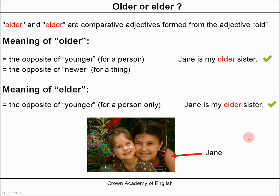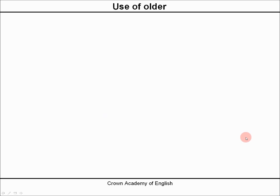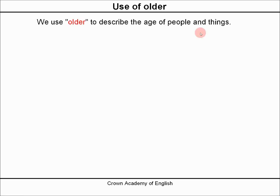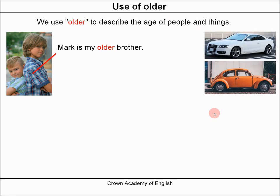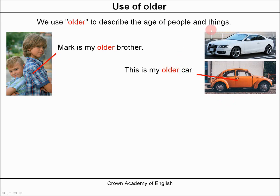So let's now look in more detail at the differences. Older — we use older to describe the age of people and things, both of them. For example: Mark is my older brother, describing people. And we can also say this is my older car, describing things.